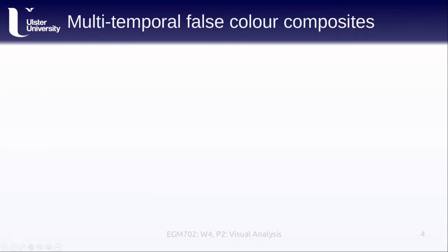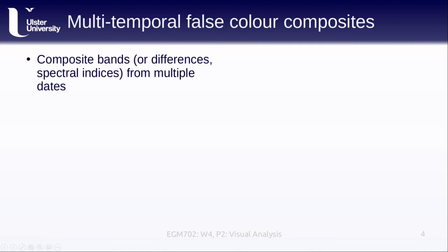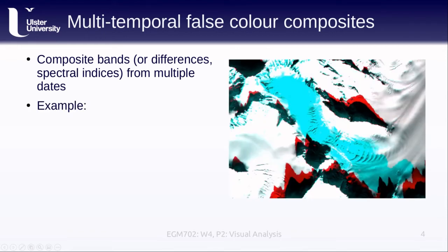Another type of visual analysis could be to form multi-temporal false color composites. With this, we composite bands from multiple dates. We can also use differences or spectral indices calculated from different dates. And we're doing this to help us visualize the changes. So when we put these together, we should see that areas with no change should be shades of gray, black, or white, while changes are going to appear in color. And the colors that we see are going to depend on how we've composited the images.